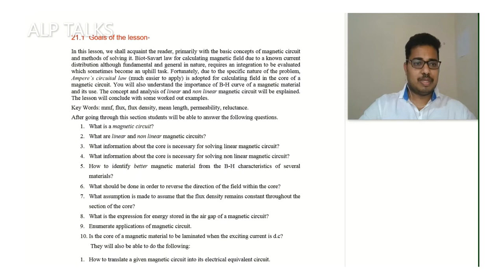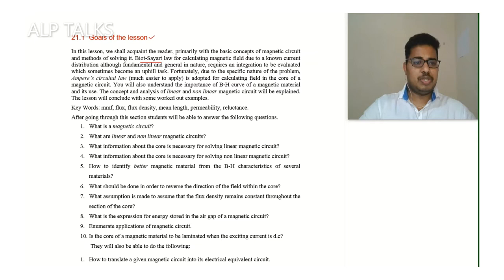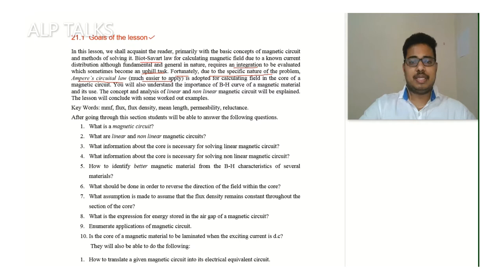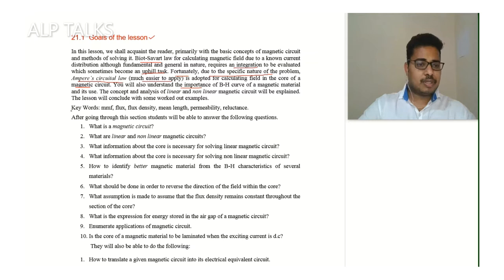The goals of this lesson: we shall deal primarily with the basic concepts of magnetic circuit and methods of solving it. Biot-Savart law for calculating magnetic field due to a known current distribution, although fundamental and general in nature, requires an integration to be evaluated which sometimes becomes an uphill task. Fortunately, due to the specific nature of the problem, Ampere's circuit law — much easier to apply — is adopted for calculating field in the core of a magnetic circuit. You will also understand the importance of BH curve of magnetic material and its use. The concept and analysis of linear and nonlinear magnetic circuits will be explained. Keywords: MMF, flux, flux density, mean length, permeability, reluctance.